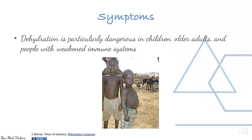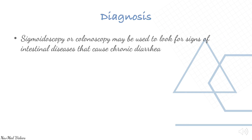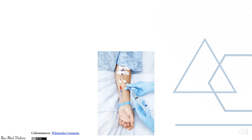Other dehydration signs in children include high fever, listlessness, and irritability. Dehydration is particularly dangerous in children, older adults, and people with weakened immune systems. Sigmoidoscopy or colonoscopy may be used to look for signs of intestinal diseases causing chronic diarrhea. Fasting tests can determine if a food intolerance or allergy is causing the diarrhea.